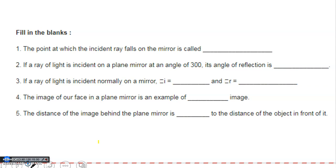Second question: if a ray of light is incident on a plane mirror at an angle of 30°, its angle of reflection is — the light is incident at 30°. By law of reflection, we know that angle of incidence is equal to angle of reflection, so the angle of reflection will also be 30°.